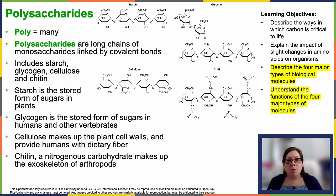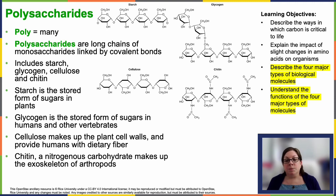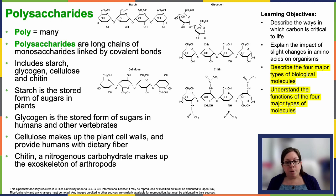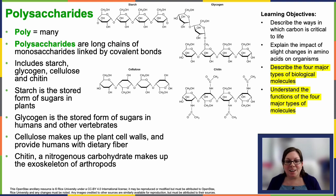Now let's look at complex carbohydrates: polysaccharides. These are what they sound like — lots of single sugar subunits bonded together to form complex structures. They serve as energy storage molecules and structural components in cells. Examples include starch in plants, which is how plants store their glucose for long-term use; glycogen, which is how animals store their glucose; cellulose, which is what paper is made out of and forms structural components in plant cell walls; and chitin, which makes up the exoskeleton of arthropods and most insects.